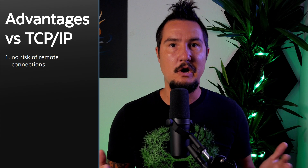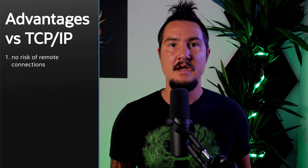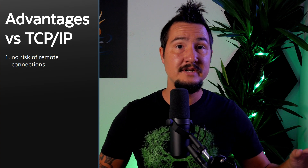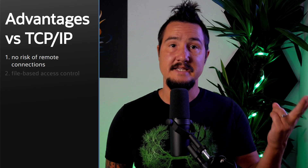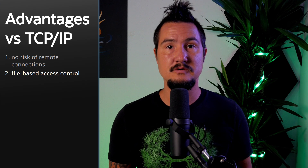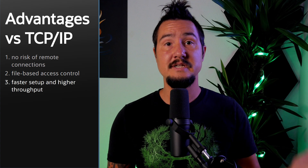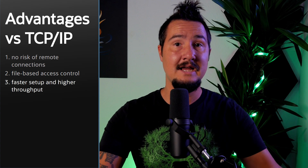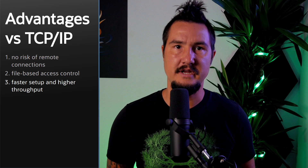If you are on the same host, you get a number of advantages over TCP/IP. First, because UNIX domain sockets can only be accessed from the same system, opening them instead of a TCP/IP socket has no risk of accepting remote connections. Second, access control is applied with file-based mechanisms, which are detailed, well understood, and enforced by the operating system. And third, UNIX domain sockets have faster setup times and higher data throughput than TCP/IP loopback connections. So if you're doing inter-process communication on the same host, maybe between Java code and some native app, I highly recommend checking out UNIX domain sockets for more throughput and security.